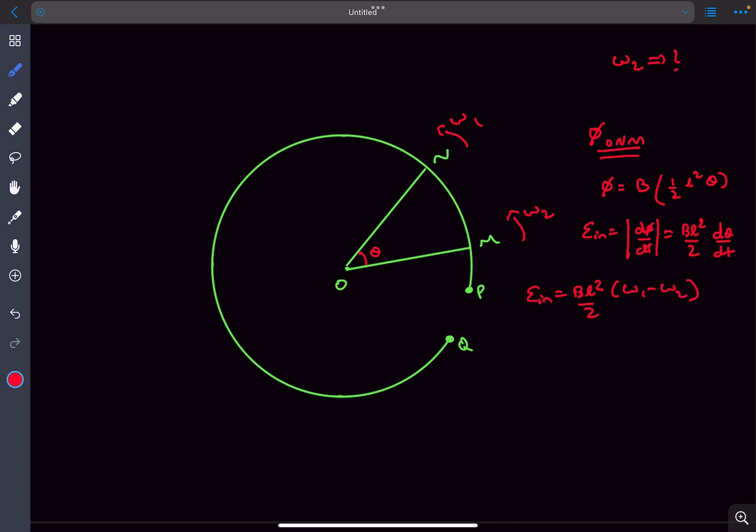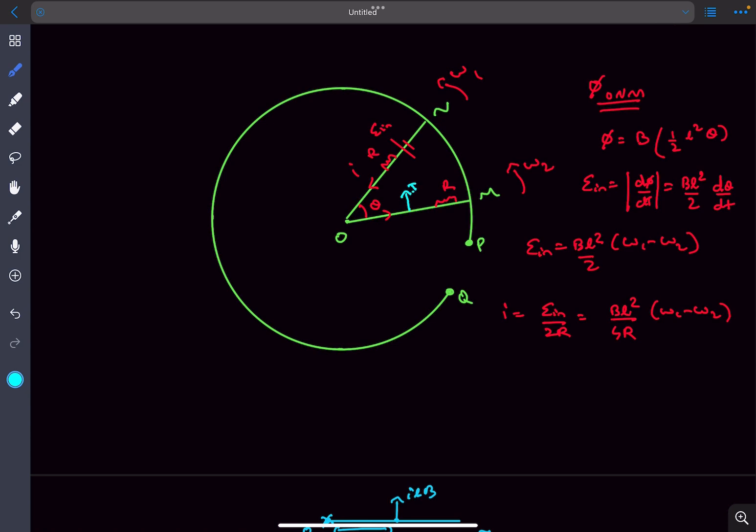Now what will be the direction of induced EMF? We just determined that the current has to flow along the anti-clockwise sense, which means the polarity of the cell will be something like this. Now both resistances of both the rods are given to be R. So the current I would be equal to E induced divided by 2R because the two resistances are in series. So finally it's going to be BL squared divided by 4R times omega 1 minus omega 2. There will be a force of magnitude ILB acting on this rod at its midpoint and similarly there will be an ILB force in the upper rod as well.